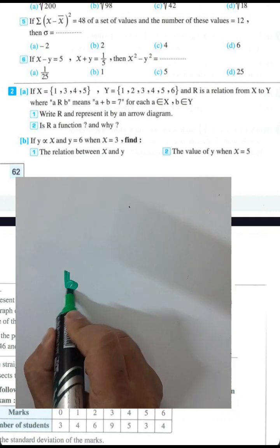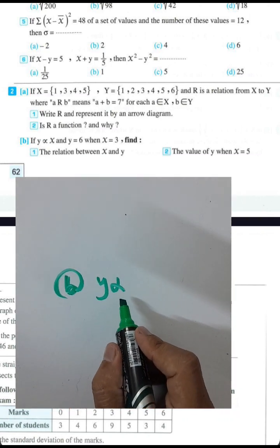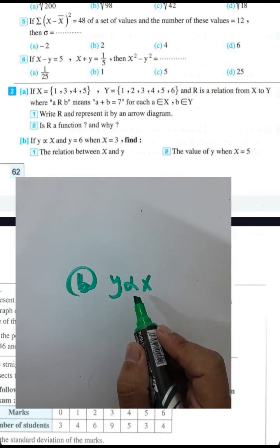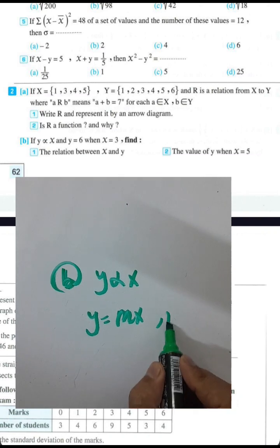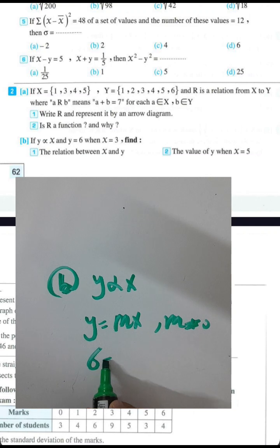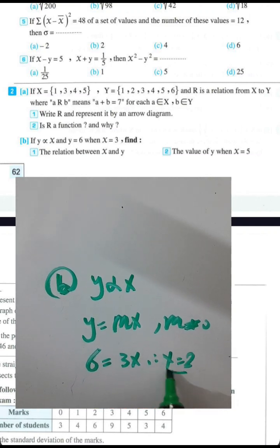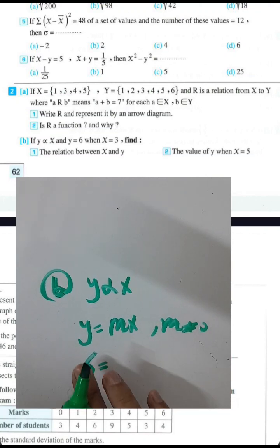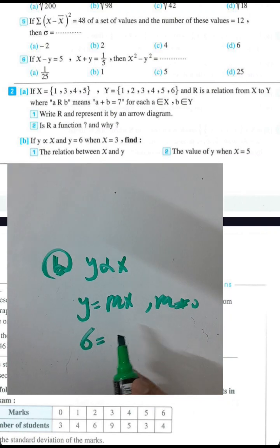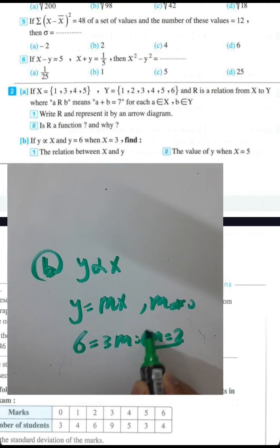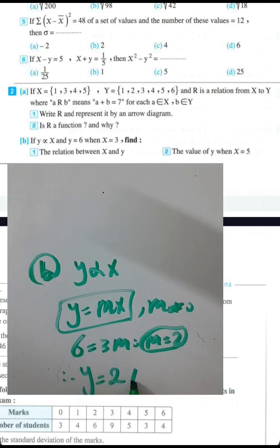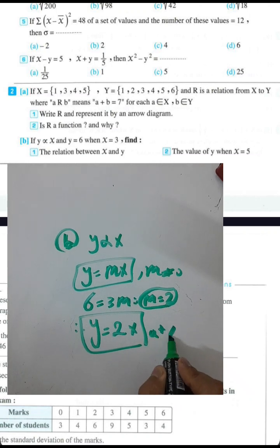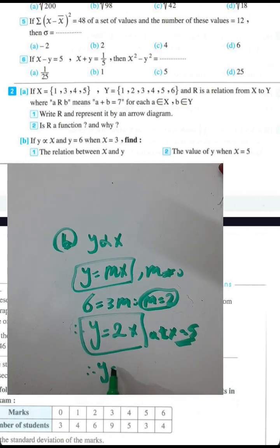Question 2, letter b: if y varies directly with x and y equals 6 when x equals 3, find the relation. We write y equals m times x where m is not equal to 0. Substituting y equals 6 and x equals 3 gives 6 equals 3m, so m equals 2. The relation is y equals 2x. To find y when x equals 5: y equals 2 times 5 equals 10.